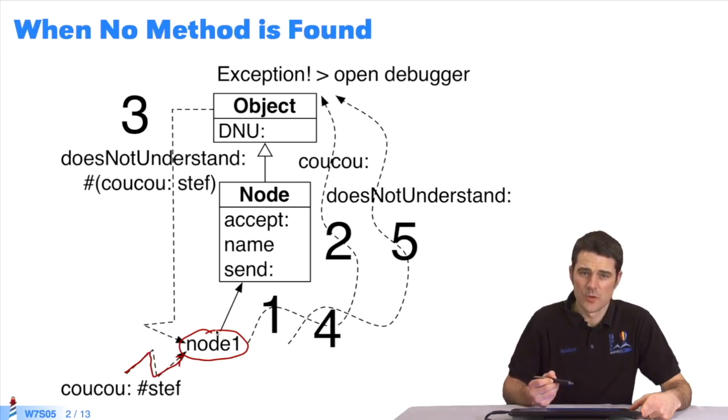From Node1, we follow the lookup method back to the object's class. We don't find the cuckoo method in this class, so we go to the superclass, but it's not there either.